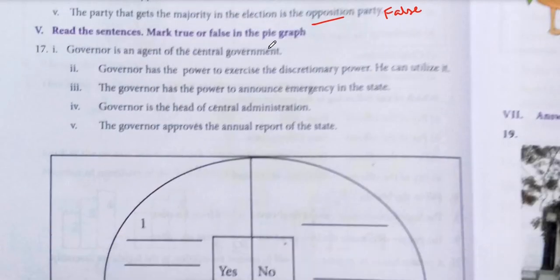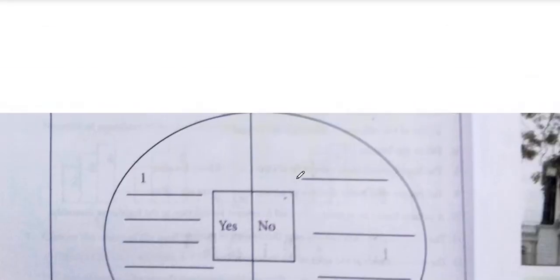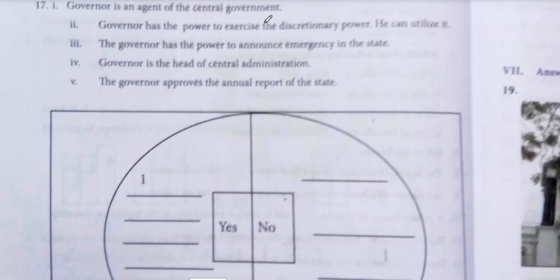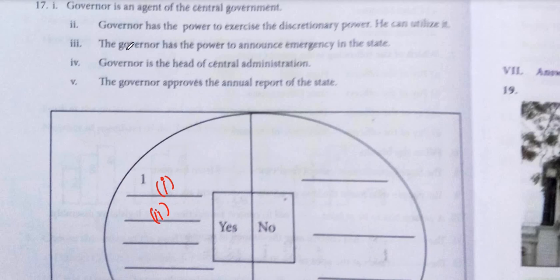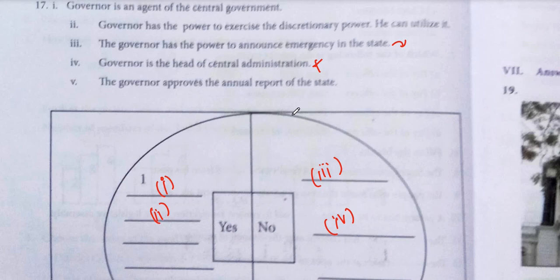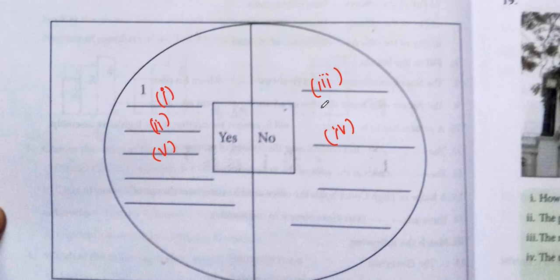Question 17 — which statements about the Governor are correct? Statement 1: Governor is an agent of the Central Government — True. Statement 2: Governor has the power to exercise discretionary power — True. Statement 3: The Governor has the power to announce emergency in the state — False; only the President can announce emergency, though the Governor can recommend it. Statement 4: Governor is the head of Central Administration — False, it should be State Administration. Statement 5: The Governor approves the annual report of the state — True. So statements 1, 2, and 5 are correct; 3 and 4 are incorrect.